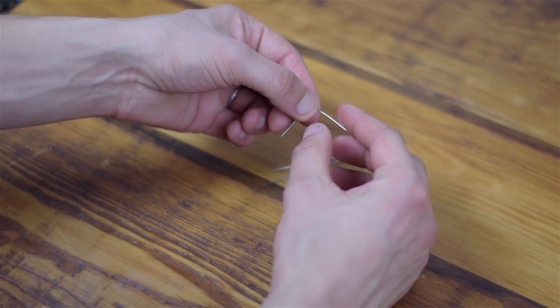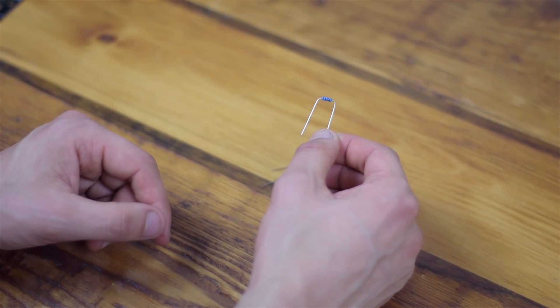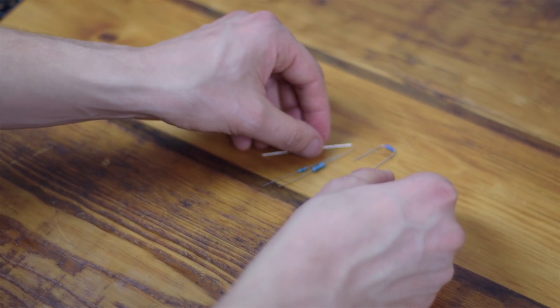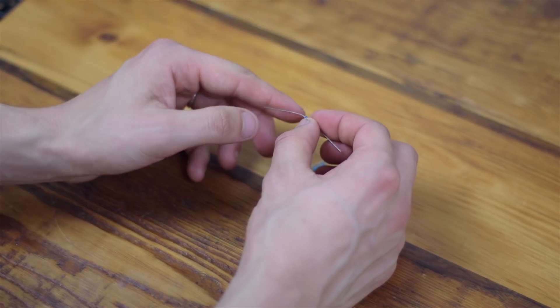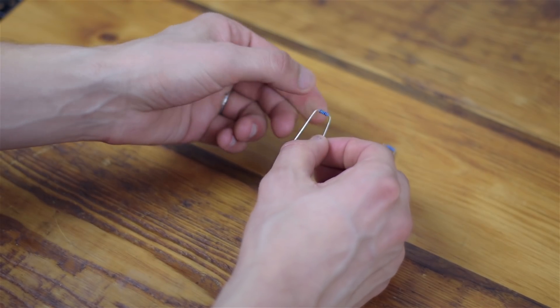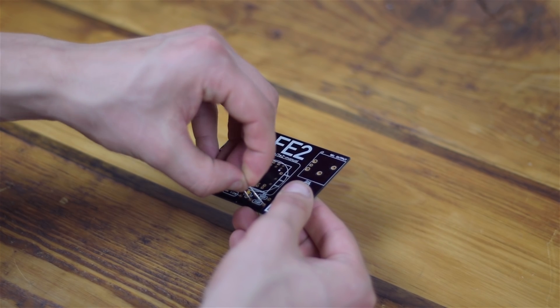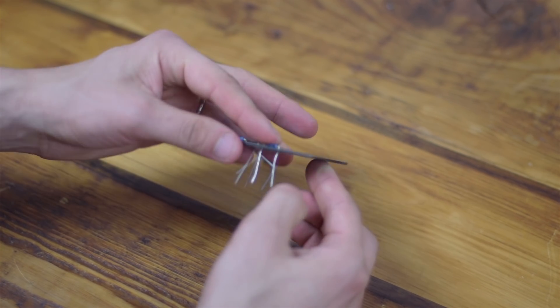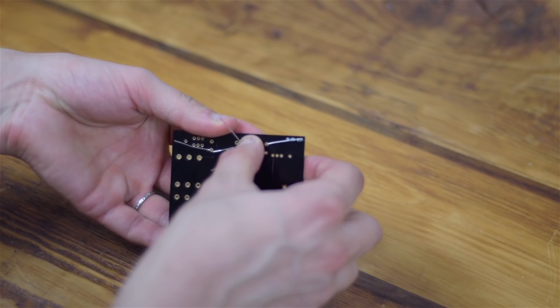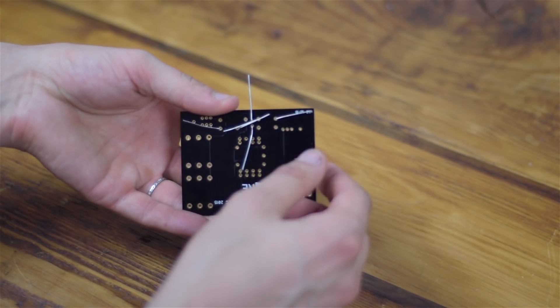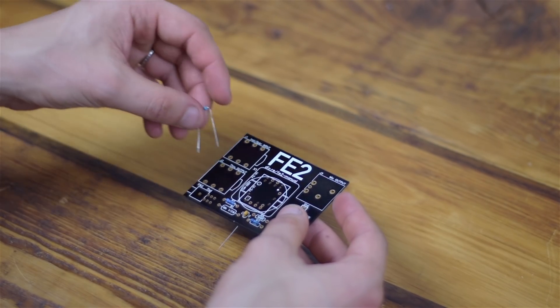Now bend the leads of the resistors against their body to make it easier to insert them into the circuit board. Now place the parts in their respective places in the circuit board. None of these parts are polarized, so it doesn't matter which direction they go in. Bend their leads against the bottom of the board as you insert them to hold them in place for soldering.